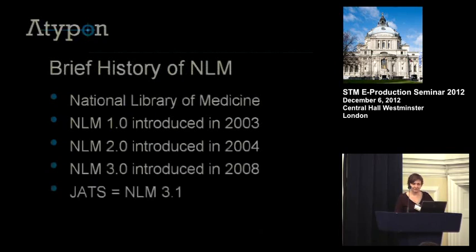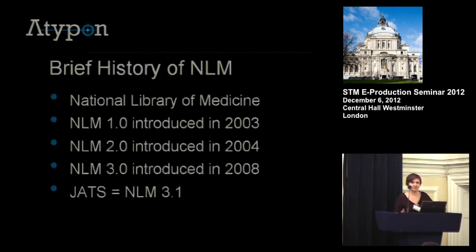A brief history of NLM: it was initially developed for the National Library of Medicine to support PubMed Central. But as the number of hands that went up in the room show, it's really taken off, especially in the STM community. The first version was released in 2003. In 2008, NLM 3.0 came out, which was the first non-backward compatible version. Book DTD was also released at that time. And JATS is just NLM 3.1 — it's completely backwards compatible with 3.0. The name change just reflects that it's become part of NISO.